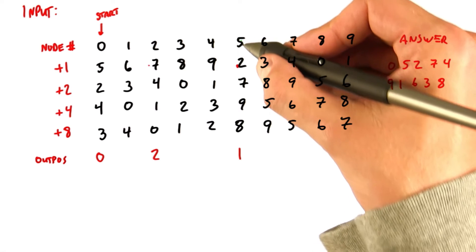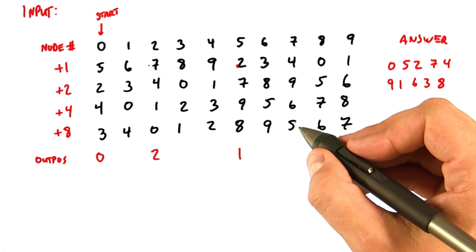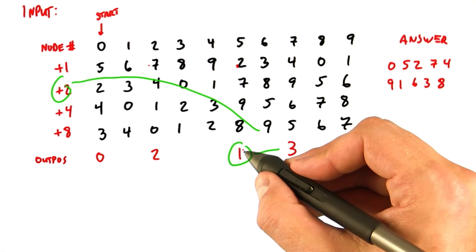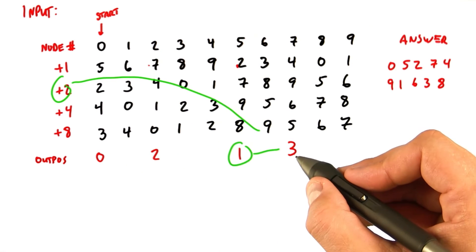Similarly, node 5 is going to wake up the node that's two hops away, in this case, node 7. Where will node 7 write its output? It knows that it will start from node number 5 at position number 1, and then we'll add two hops to that and get position number 3.